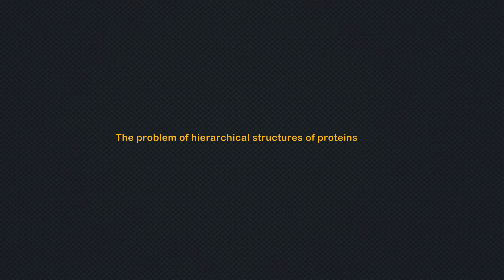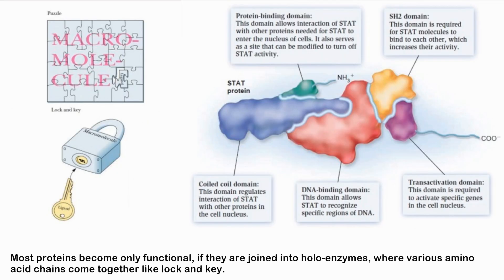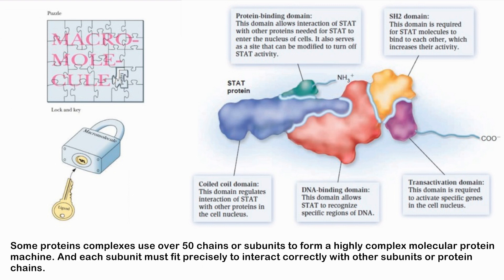Even if somehow a polypeptide chain in a functional sequence would emerge and fold into a useful form, that does not explain how to get the proteins that require several chains. Most proteins become functional only when joined into holo-enzymes where various amino acid chains come together like lock and key. Some protein complexes use over 50 chains or subunits to form a highly complex molecular protein machine, and each subunit must fit precisely to interact correctly with other subunits.